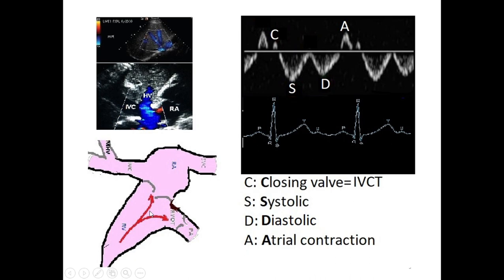Near the end of diastole, right after the P wave, the right atrium contracts. Atrial contraction increases pressure inside the right atrium, forcing blood in all directions — into the SVC, right ventricle, IVC, and finally into the hepatic vein. Blood moves backward toward the transducer, producing the final positive deflection, called the A wave because of atrial contraction. This cycle repeats every cardiac cycle.